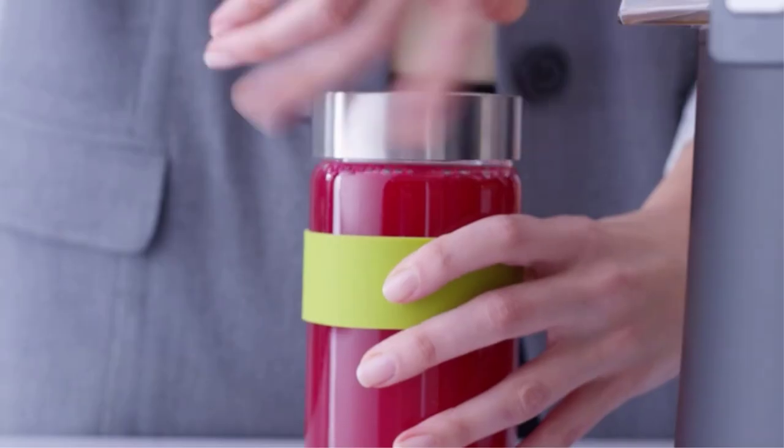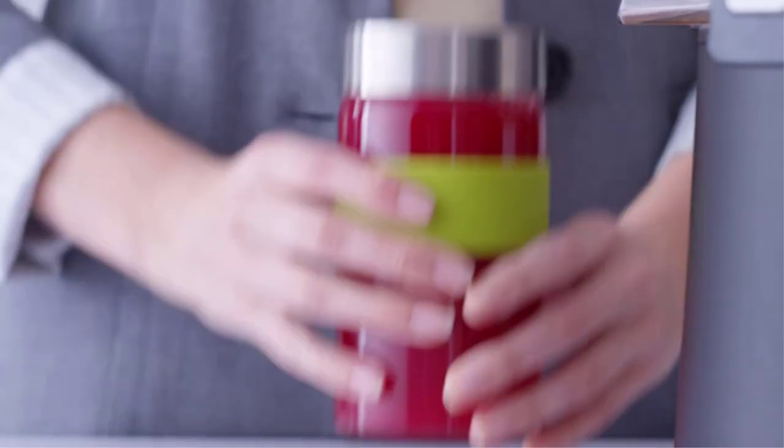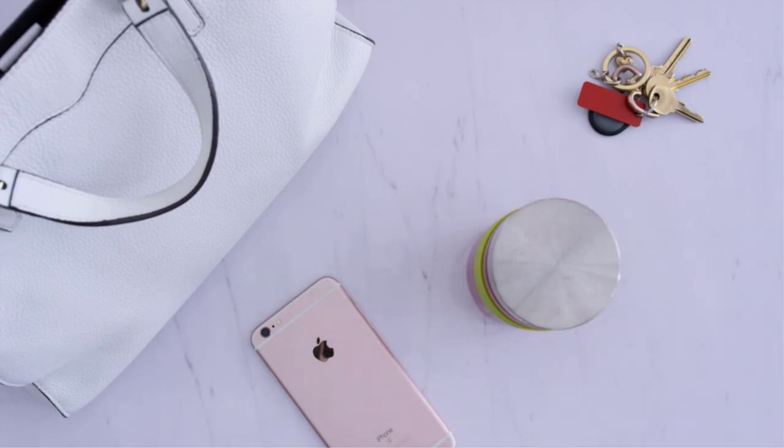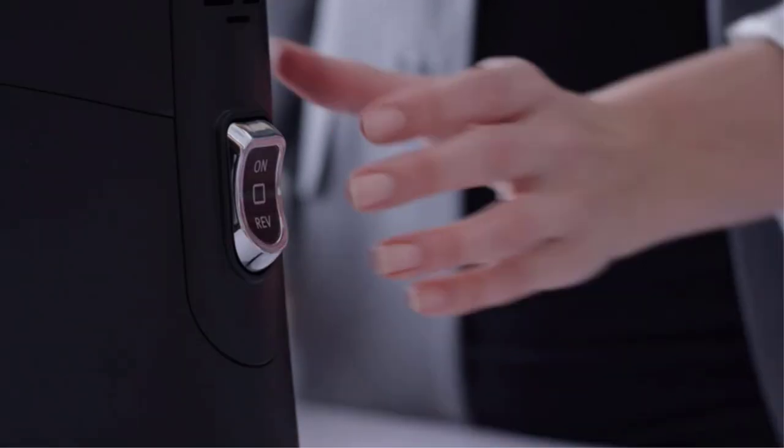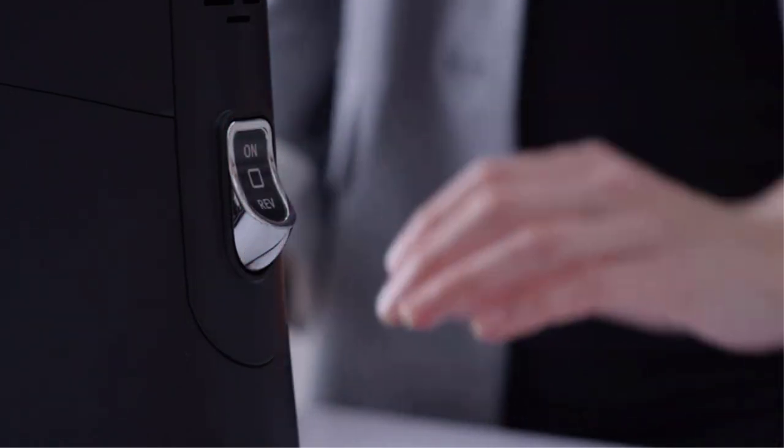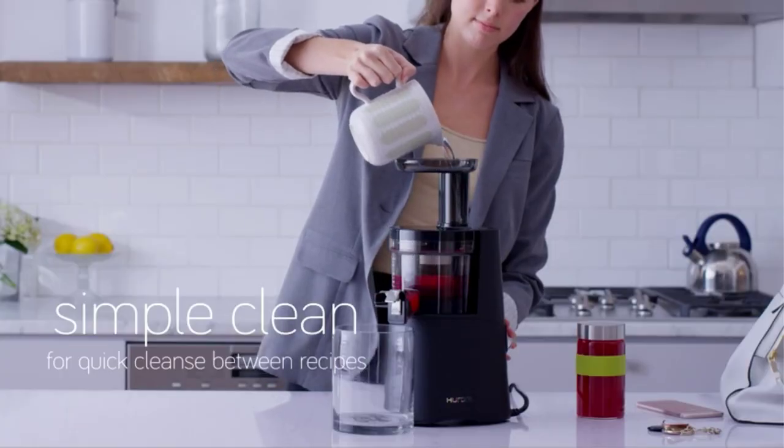Commercial juicers are best for any restaurant and for large families. If you have a juice bar in your restaurant, the best way to keep up with demand is to invest in a commercial-grade juicer. These machines can create juice quickly and efficiently, so that your customers will walk away happy.